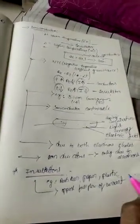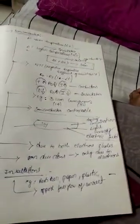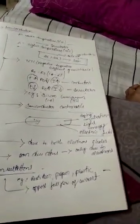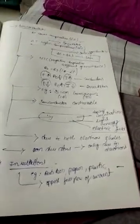That is about today's session covering conductors, semiconductors, and insulators. In the next session, we will discuss energy band diagrams for semiconductors, conductors, and insulators, Fermi level, and n-type and p-type semiconductors. Today it is enough. Bye, take care.